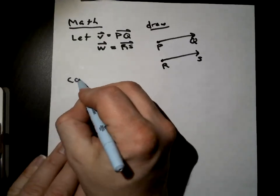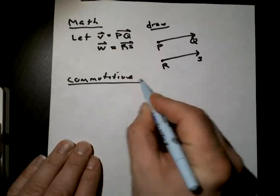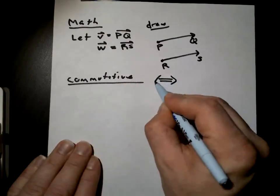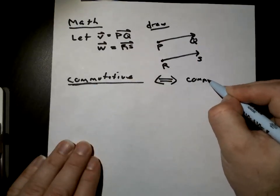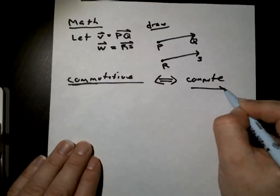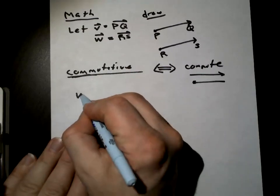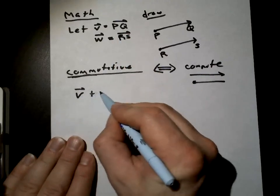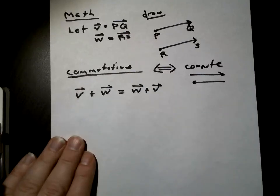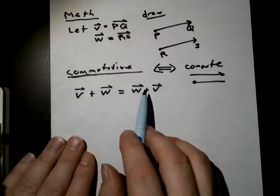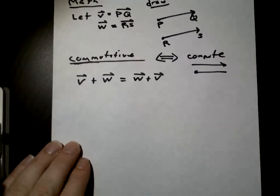I want you to understand the commutative property. When you hear commutative, think of a commute — going back and forth. If I take this vector plus this vector, that's the same as adding them the other way. So if you add these two vectors, you get the same result either way.